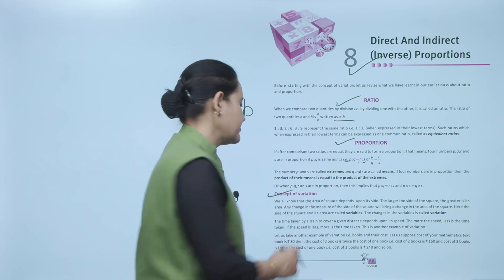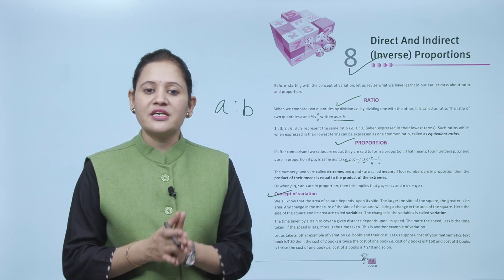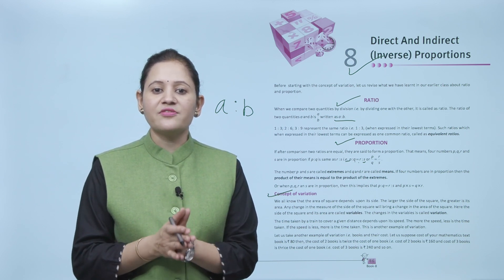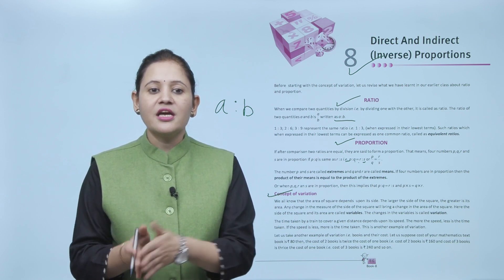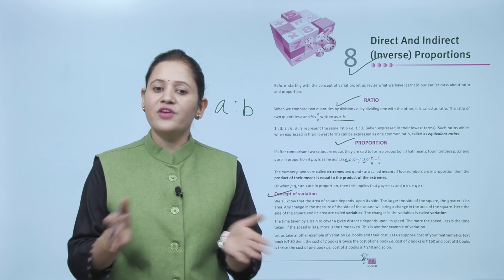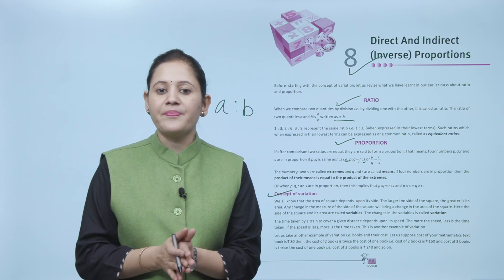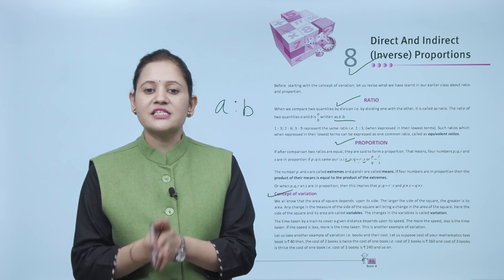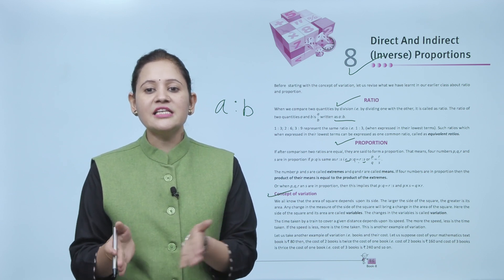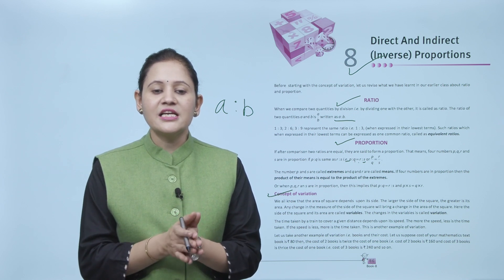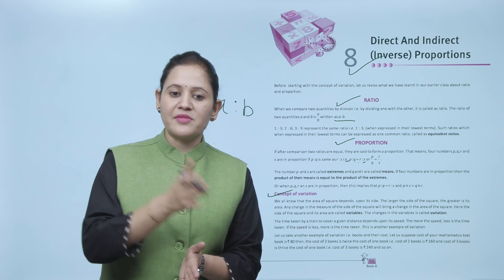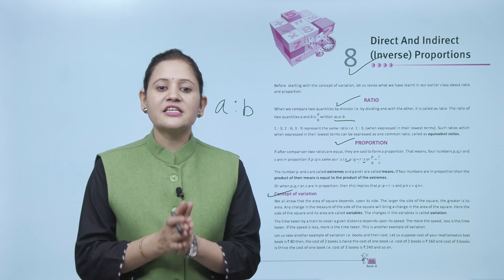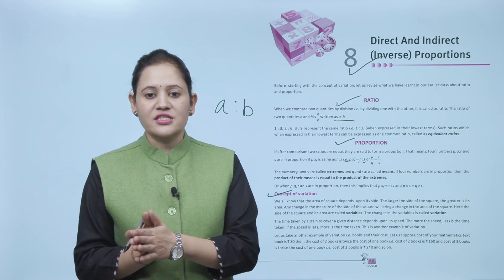Next is the concept of variation. We know the area of a square depends upon its side — the larger the side, the greater the area. Any change in the side brings a change in the area; the side and area are called variables. Similarly, the time taken by a train to cover a given distance depends on speed: more speed means less time, less speed means more time.